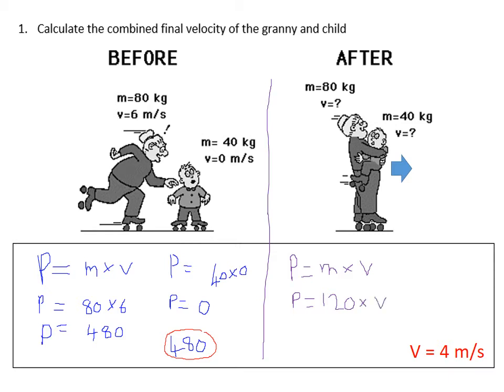And we don't know what speed they move off at. We don't know what v is - v is a question mark. But we know that this momentum and this one must be the same because momentum is conserved. Therefore 480 must be equal to 120 times v. And therefore v must be equal to 4. There's the answer down there - v must be equal to 4.